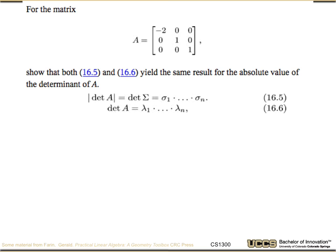Okay, so another problem. For the matrix shown here, this 3x3 matrix, show that both the two different ways we've talked about estimating the determinant from eigenvalues and singular values result in the same absolute value of the determinant. So recalling the equation 16.5, the absolute value of the determinant of A is equal to the determinant of the singular value matrix sigma, which is just the product of the singular values. And then the other way is that the determinant of A are the eigenvalues of A, lambda 1 through lambda n, which is their product. So work through and see if you can actually work out what that proof would look like.